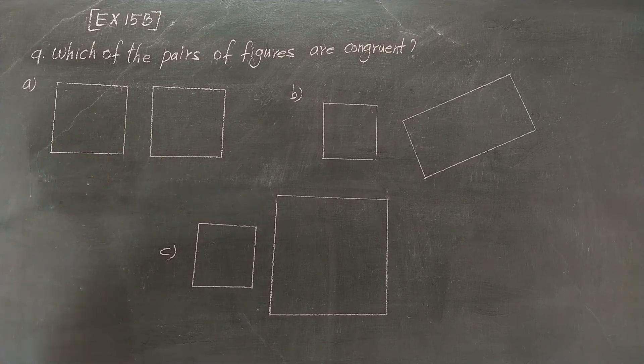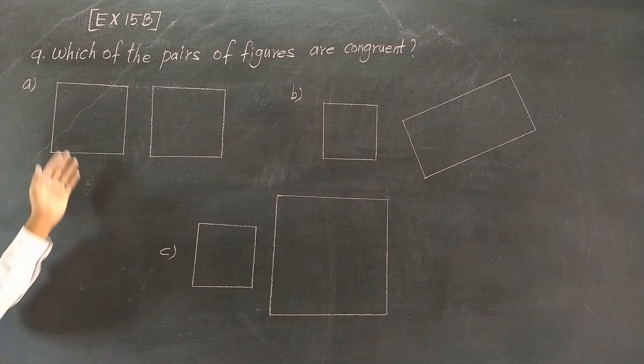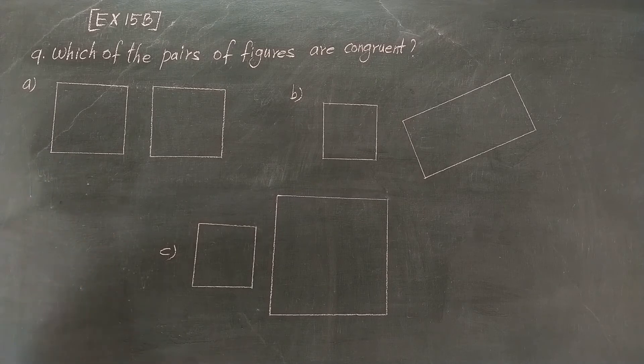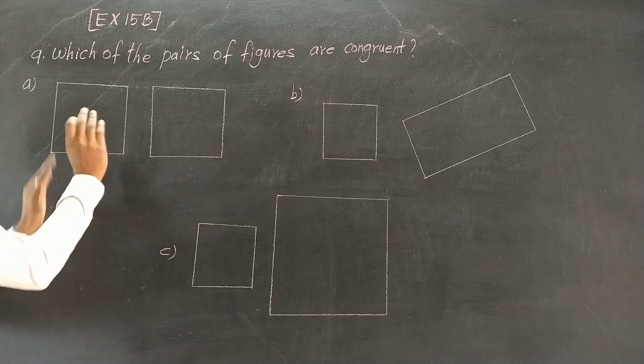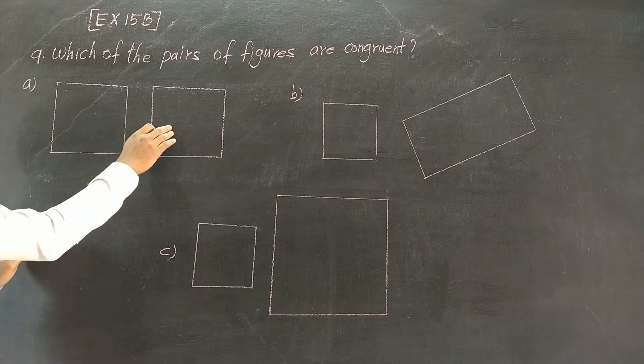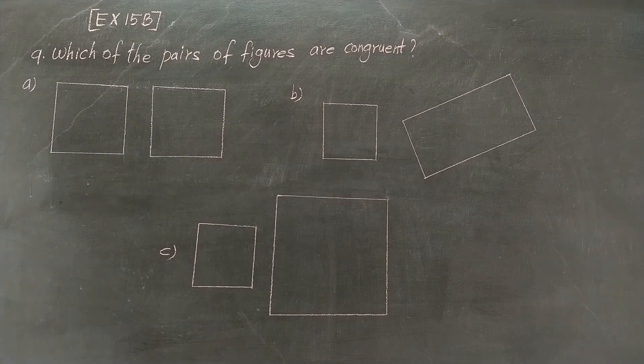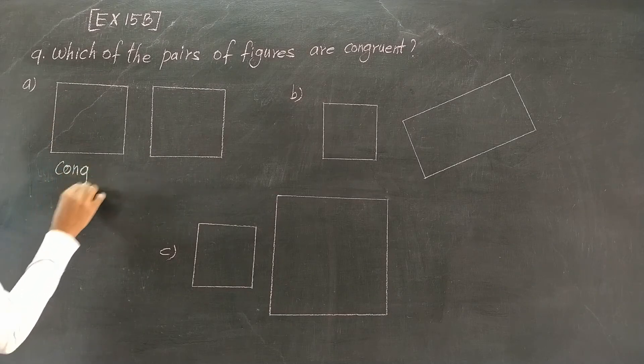In this question, if the square shape is in the same way, the square here is the same as the two. One is the same as the square, the size is the same as the two. The answer is congruent.